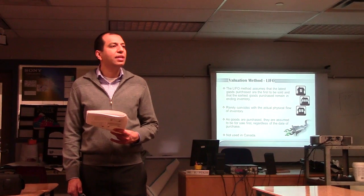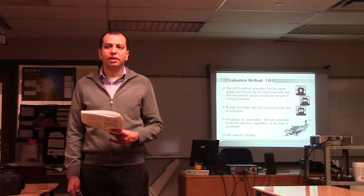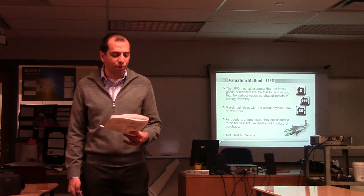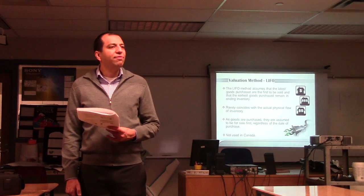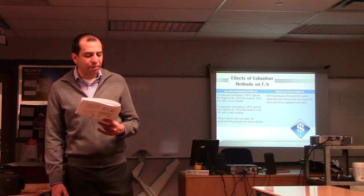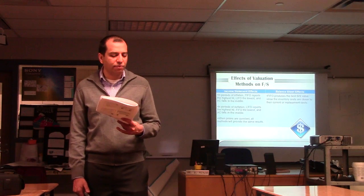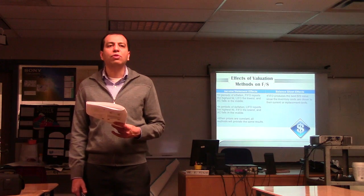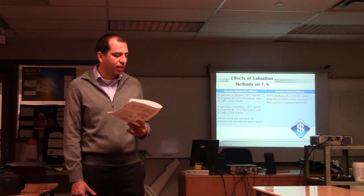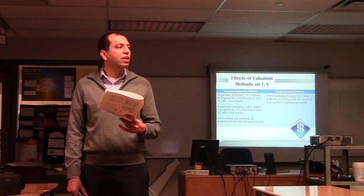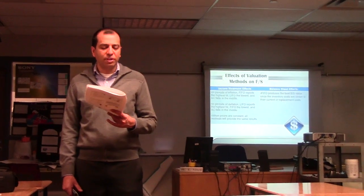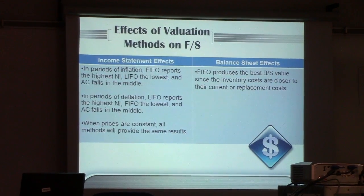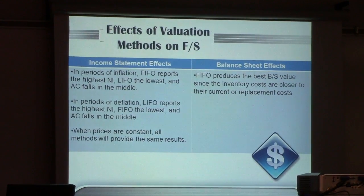To summarize: the four methods are Just-In-Time (Specific Identification), Average Cost, FIFO, and LIFO. There are several effects of these valuation methods. For income statement effects, in periods of inflation FIFO reports the highest net income because you assume you are selling the lowest-cost products first, which increases net income. LIFO produces the lowest net income, and Average Cost falls somewhere in the middle.